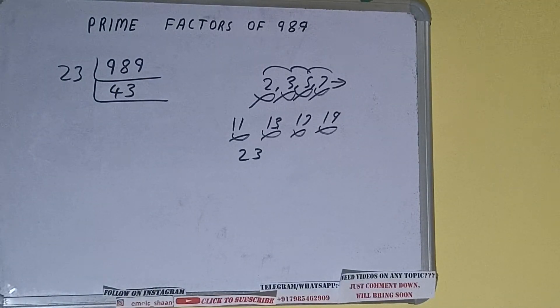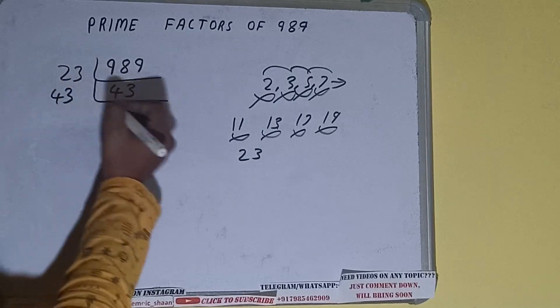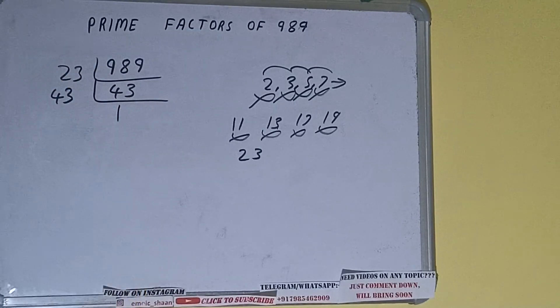We'll be having 43, and 43 is further not divisible by 23. And note that 43 is also a prime number, so it is only divisible by itself. Once we do so, we'll be getting 1.